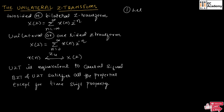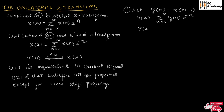Now, let us consider Y of n is equal to X of n minus 1. For this, let us perform the unilateral Z transform. We know we can write Y of Z is equal to summation of n is equal to 0 to infinity, Y of n, Z to the power of minus n. Let us substitute Y of n in this expression. We will get Y of Z is equal to summation of n is equal to 0 to infinity, X of n minus 1, Z to the power of minus n.